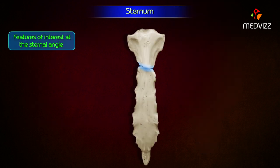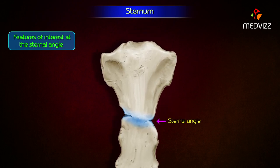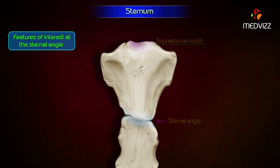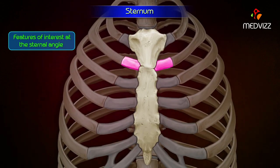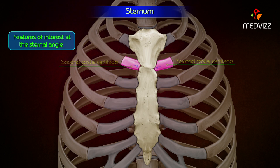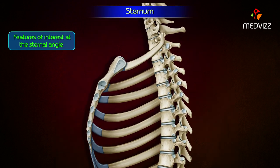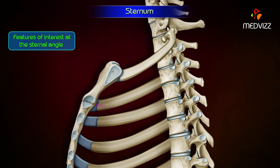Features of interest at the sternal angle. The sternal angle can be felt as a transverse ridge on the sternum about 5 centimeters below the suprasternal notch. It is an important surface landmark for many anatomical events. The second costal cartilage articulates on either side with the sternum at this level; hence, this level is used for counting the ribs. It lies at the level of the intervertebral disc between T4 and T5.